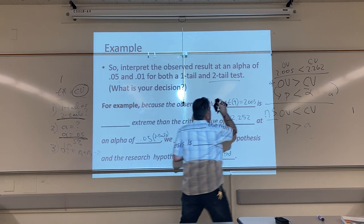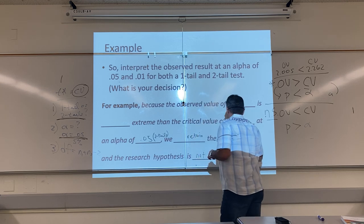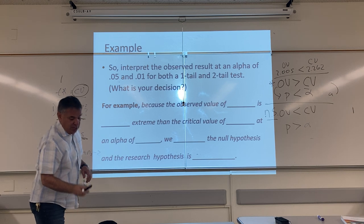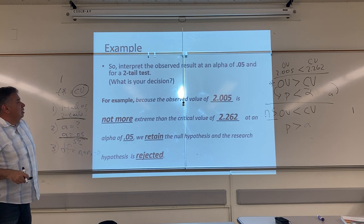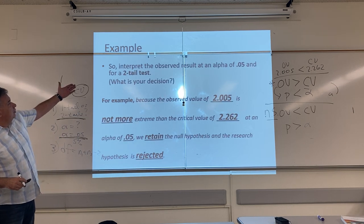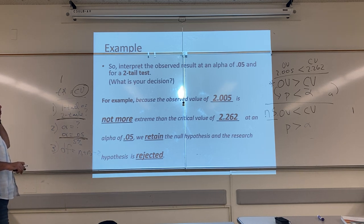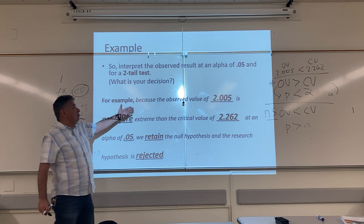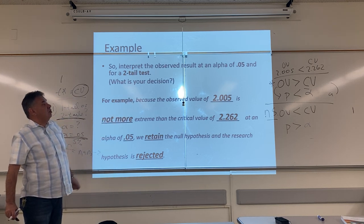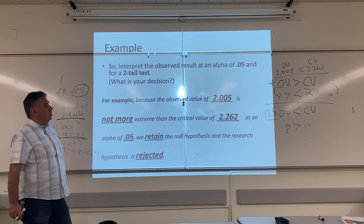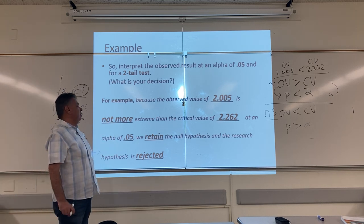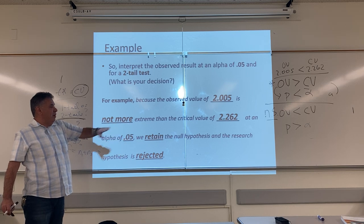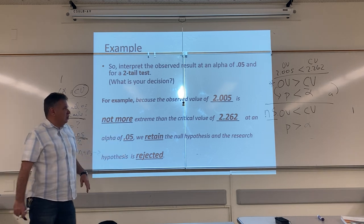All right. So, let me erase this real quickly because I have it printed out so you can read it because my writing is sloppy. And there it is. So, what did we do? We interpreted the observed result at an alpha of 0.05 for a two-tail test. What is our decision? Because the observed value of 2.005 is not more extreme than the critical value of 2.262, at an alpha of 0.05, we retain the null hypotheses, and the research hypotheses is rejected.